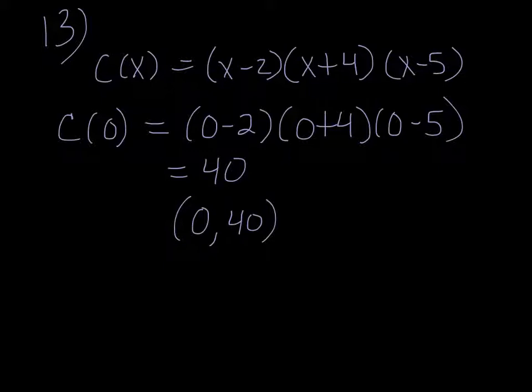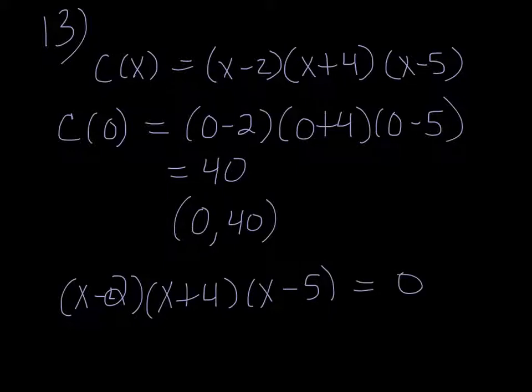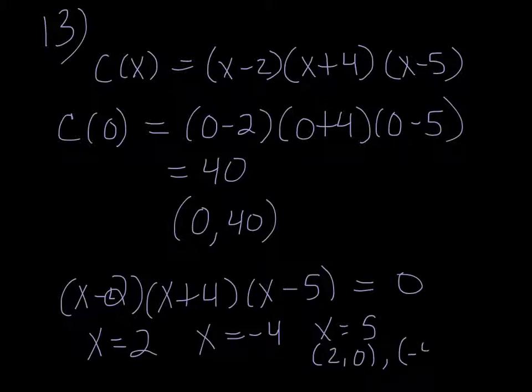To get your x-intercepts, we're going to take the equation and set it equal to 0. So this time c of x is 0. And of course we're going to get x equals 2, x equals negative 4, x equals 5. So that gives us the intercepts 2, 0, negative 4, 0, and 5, 0.